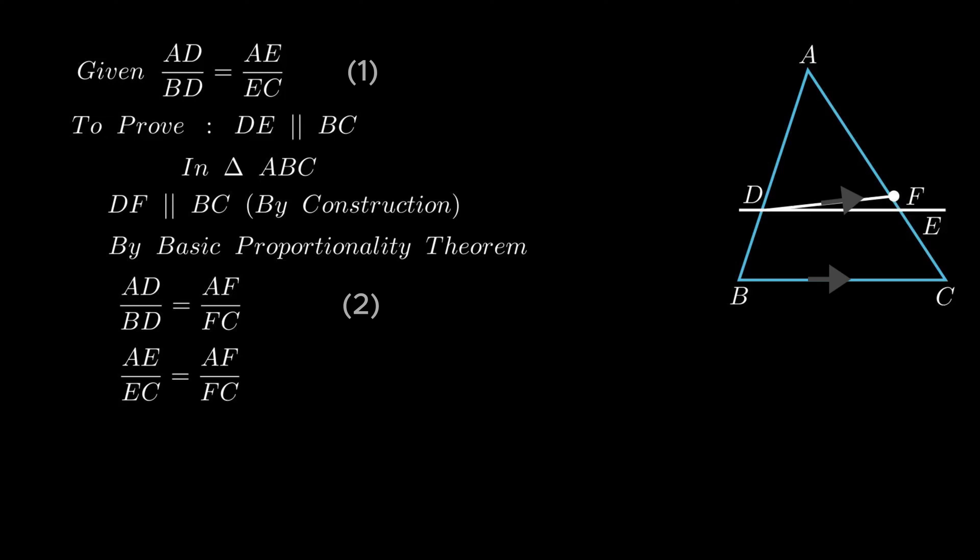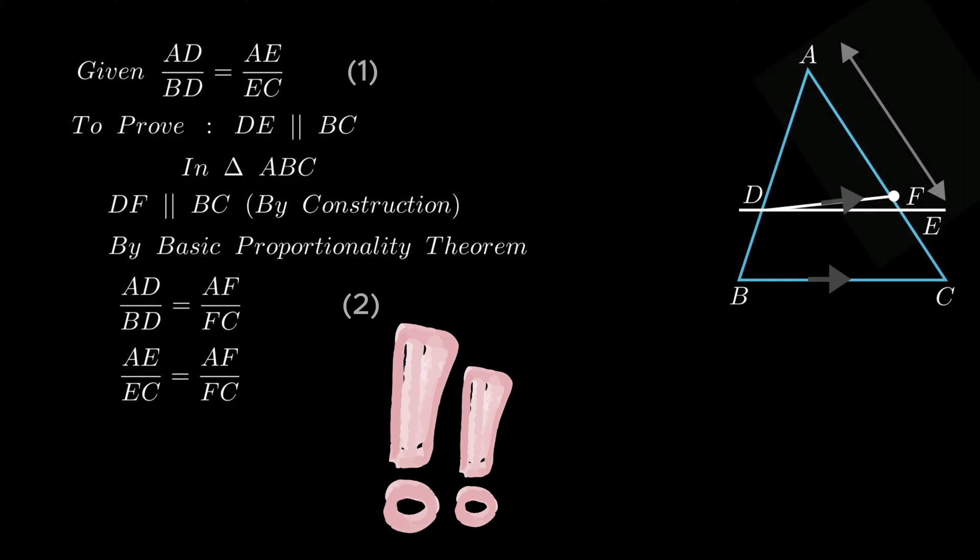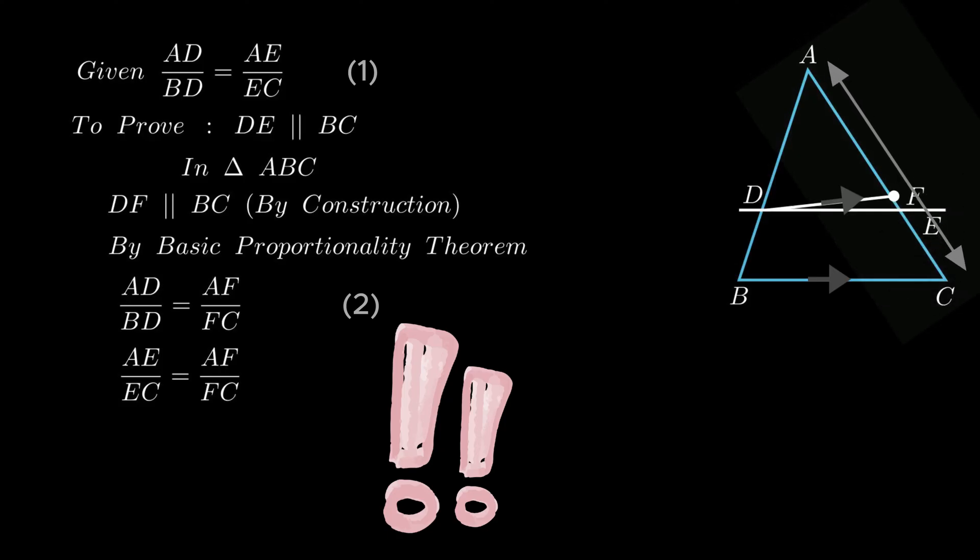Now to further solve this equation we either need to make numerator or denominator same. As from figure both segment AF and segment AE are part of segment AC, so to make segment AE to segment AC we need to add segment EC. Whereas to make segment AF to segment AC it requires segment FC which is present in the denominator.